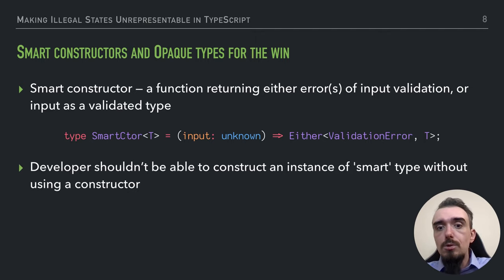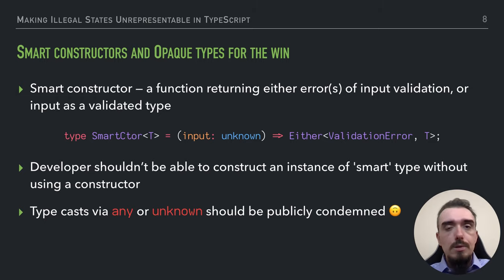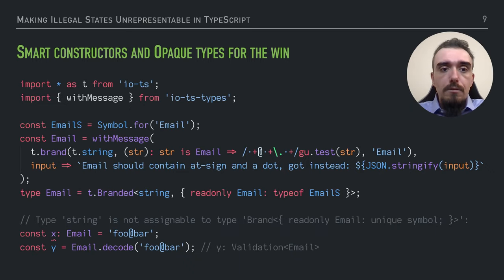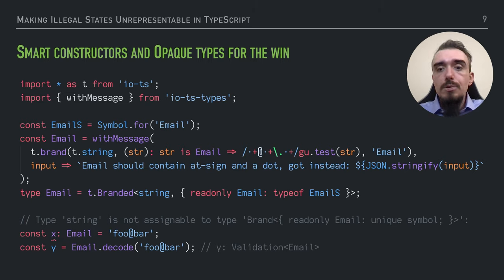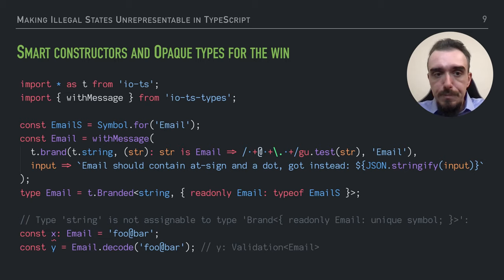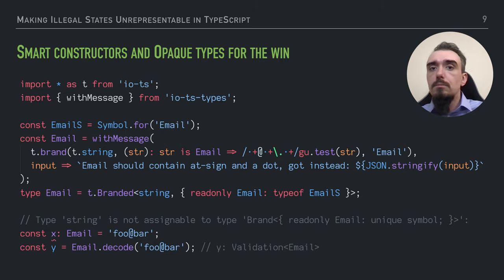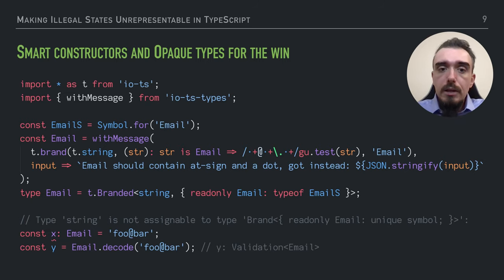The developer shouldn't be able to construct an instance of this so-called smart type without using a constructor. And of course, type casts using 'any' or 'unknown' should not be allowed. Here's an example from a production project. The first part is creating a validator for a user's email using an incredible library called io-ts and its satellite library called io-ts-types. The email validator is a branded type for string — in other words, an opaque type for string — which uses a regex to validate the input. And if validation fails, it will give a nicely formatted error.